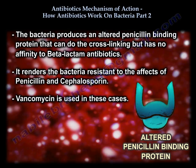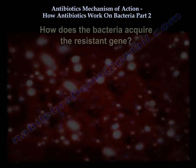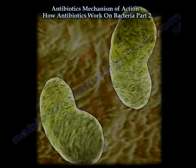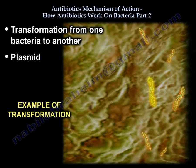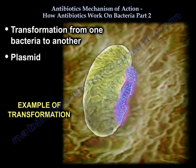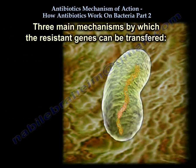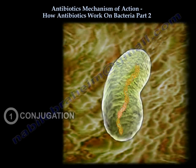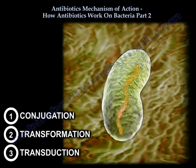How do bacteria acquire this resistant gene? It can be done by transformation from one bacteria to another, or through a plasmid. There are three main mechanisms by which the resistant gene is transferred: conjugation, transformation, and transduction.